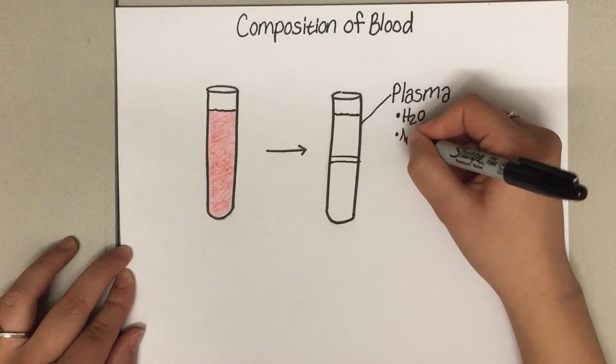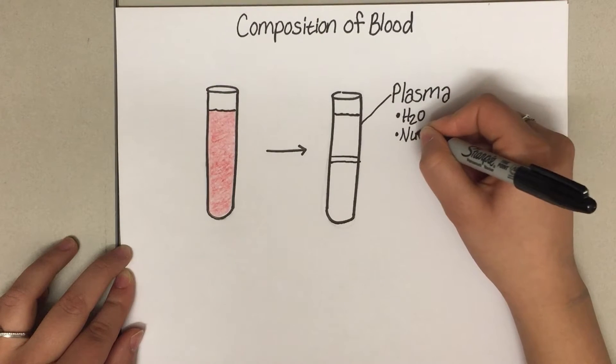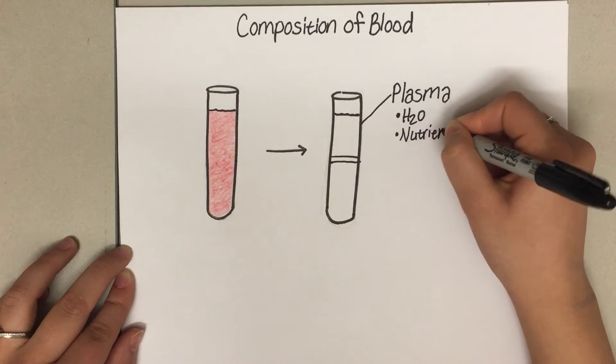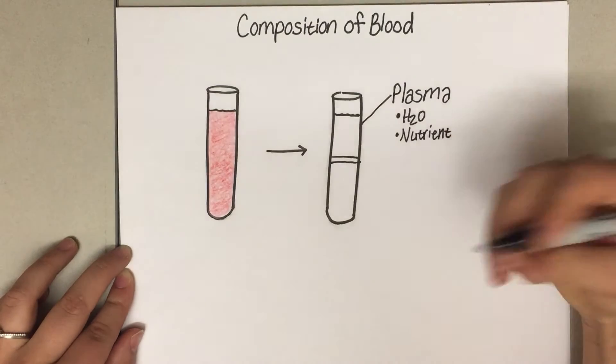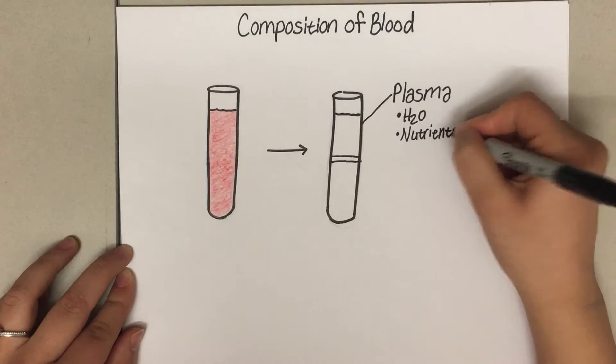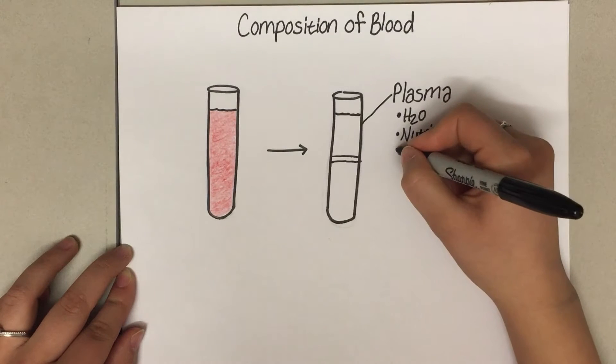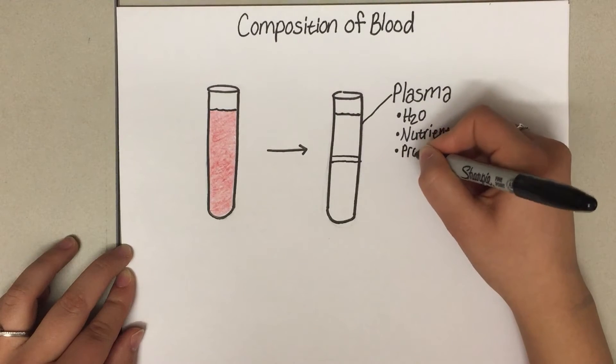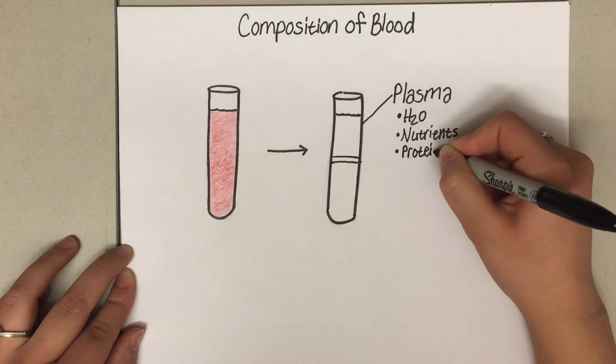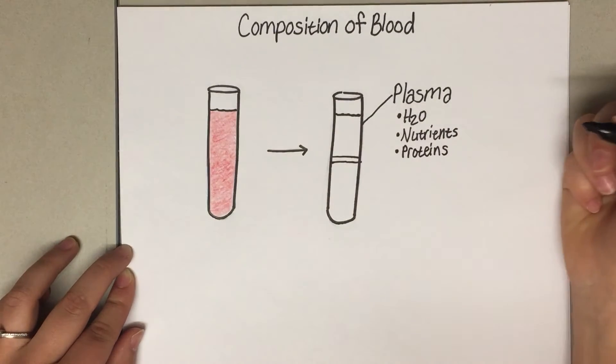Plasma also has lots of nutrients. This is where amino acids, proteins, lipids, and glucose will be carried in the blood. And it also contains some very important proteins such as albumin, globulin, and fibrinogen.